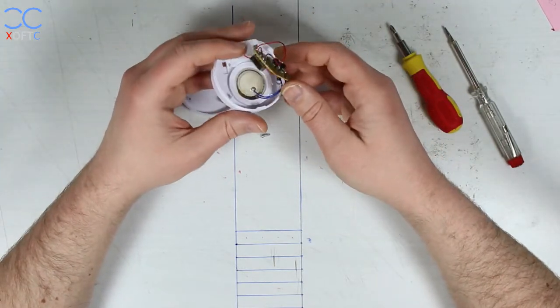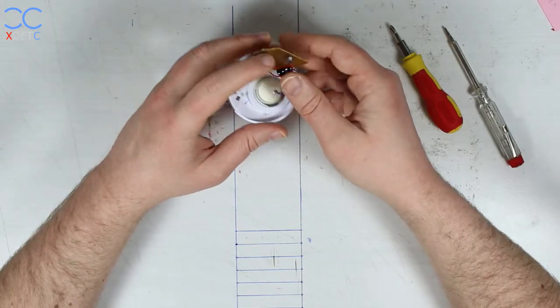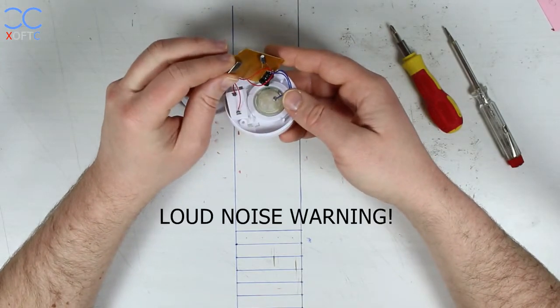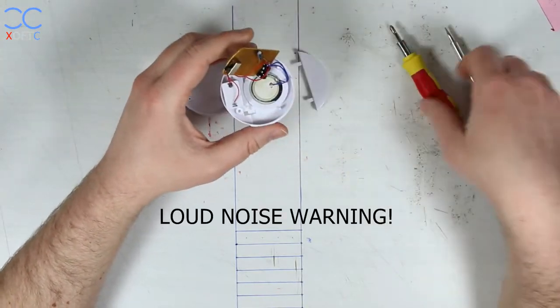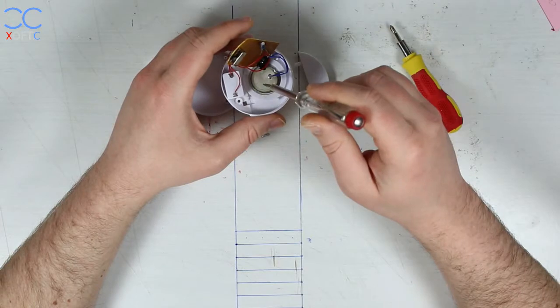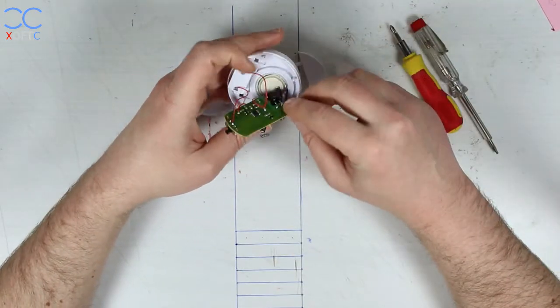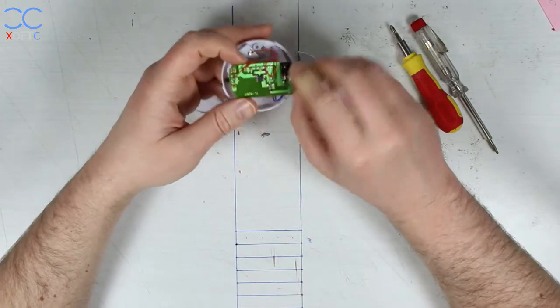Here we have the piezo element, it's right here. As you can see, if I set it on and then I just tap the element, it sets off the alarm.